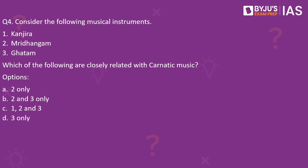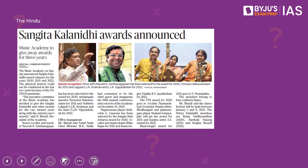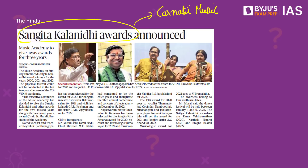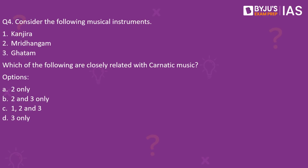Moving on to the fourth question of the day: consider the following musical instruments — Kanjira, Mridangam, and Ghatam. Which of the following are closely related with Carnatic music? Recently, the Sangeeta Kalanidhi awards were announced, which are associated with Carnatic music. The awardees generally belong to the southern states where Carnatic music is most prevalent. All three instruments — Kanjira, Mridangam, and Ghatam — are related with Carnatic music, so the answer is C, 1, 2, and 3.